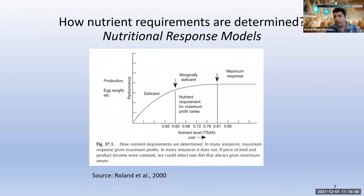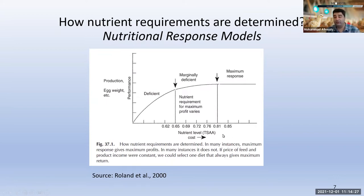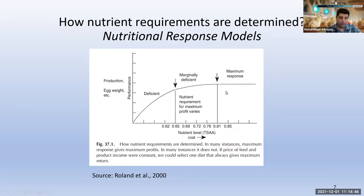This graph shows how nutrient requirements are determined. One way is to use nutritional response models: you feed different levels of nutrients — for example, amino acids or energy — plot the production response, and find the maximum response. The nutrient requirements published in many catalogs and manual guides are based on this maximum response.